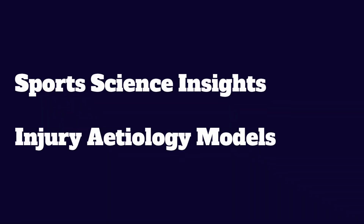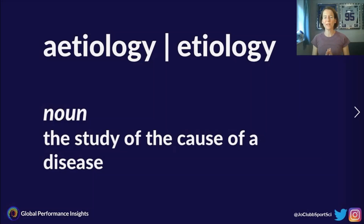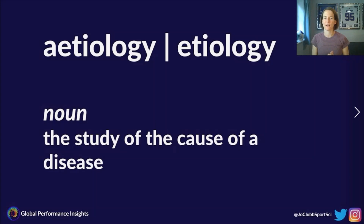Today we're going to be talking about why injuries occur in sport, and specifically we're going to go through some of the injury etiology models published in the literature. Before we go any further, let's define what we mean by etiology — depending on whether you speak British or American English will determine whether you spell it with 'ae' or just 'e'. It is defined as the study of the cause of a disease, and in this case we are treating injury as the disease.